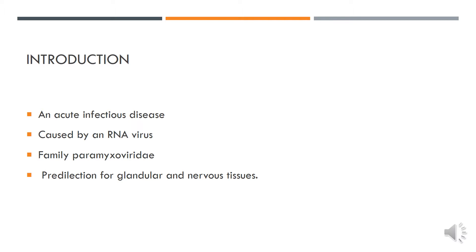Mumps is a widely prevalent disease all over the world, its burden being higher in countries where vaccination against mumps is not offered routinely. Remember, it is a vaccine-preventable disease. It is an acute infectious disease caused by an RNA virus belonging to the Paramyxoviridae family. This virus has a high predilection for glandular and nervous tissues.